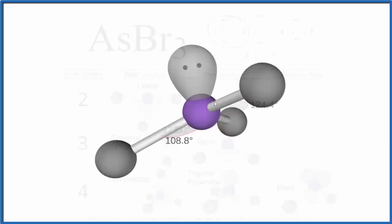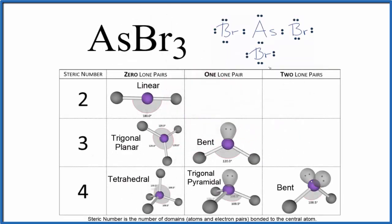Back to our Lewis structure. We could also use the AXE notation to figure out the geometry here for AsBr3. So A, that's the central atom, that's the arsenic. X, that's the number of atoms bonded. We have the one, two, three bromine atoms. And E, that's the number of lone pairs. We only have the one lone pair here.